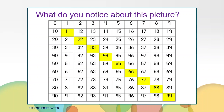What else did you notice in the number chart? What do you notice about the numbers in these yellow boxes? Did you notice they all have the number 4 in the ones place? Did you notice you add 10 to each number to get the next number in the yellow box? 4 and 10 makes 14, then 14 and 10 makes 24. What else did you notice on the number chart?